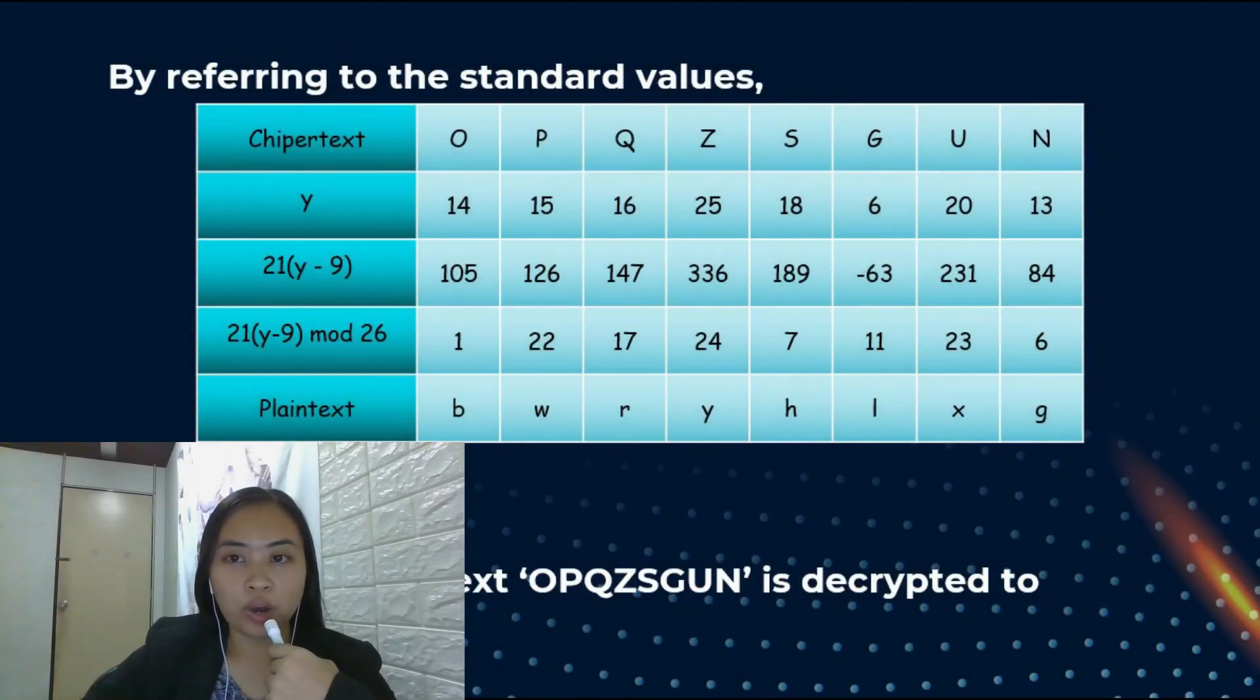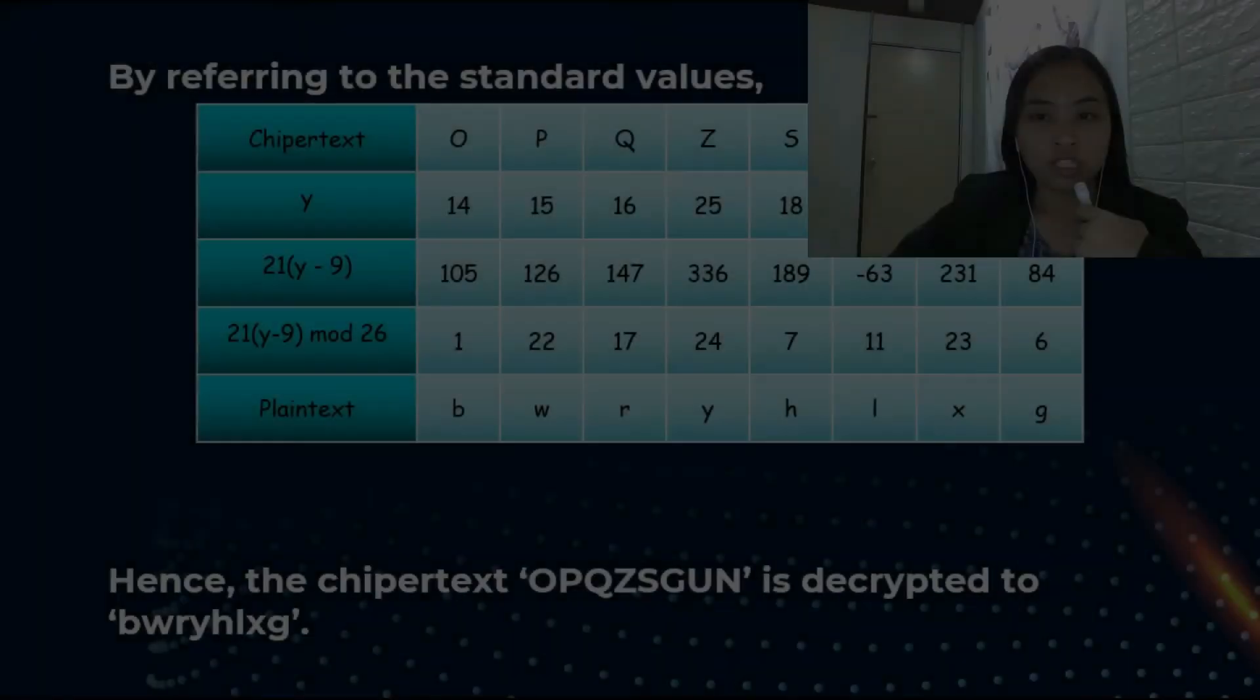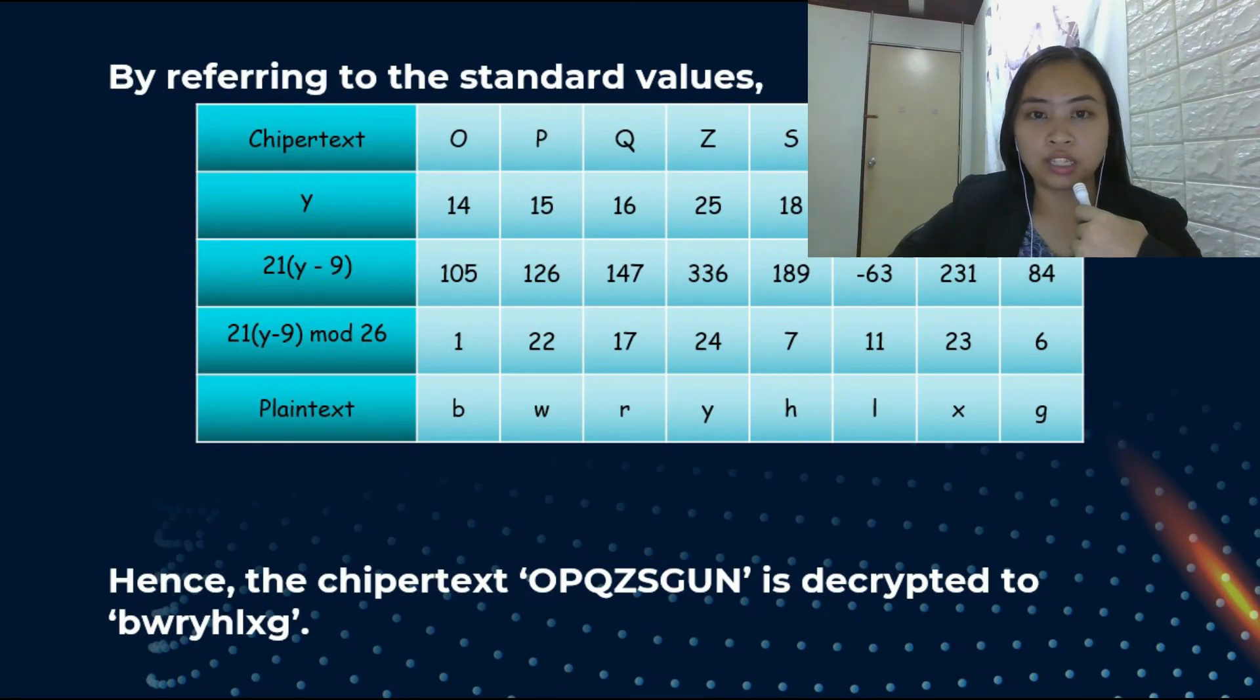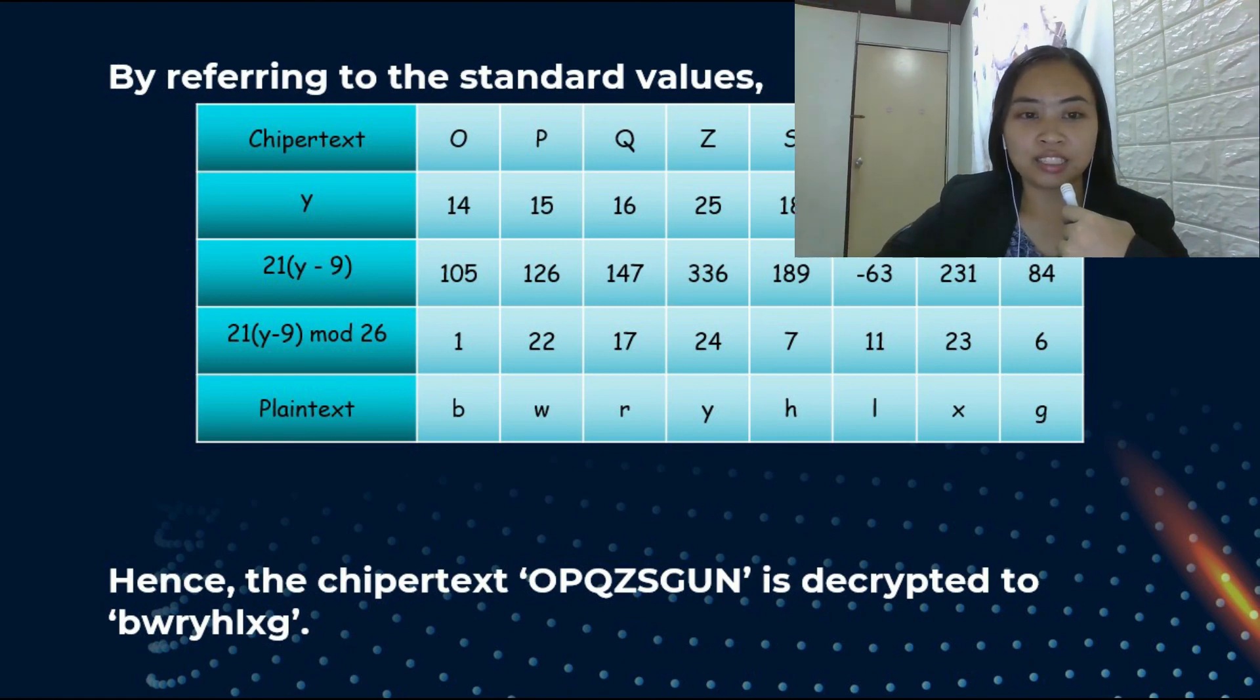Next, make a table as in example 1, but the first column will contain ciphertext, Y, 21 times (Y minus 9), 21 times (Y minus 9) mod 26, and plaintext. Substitute the ciphertext in the first row, and then calculate each Y by referring to the standard table. Then, calculate 21 times (Y minus 9) and 21 times (Y minus 9) mod 26. Next, the final number will be obtained and we will refer to the standard values once again. Hence, the ciphertext O P Q Z S G U N is decrypted to B U R Y H I M.